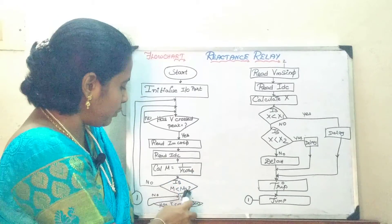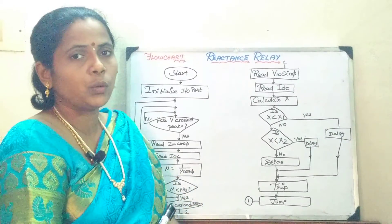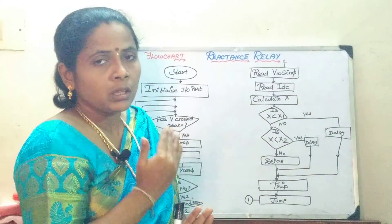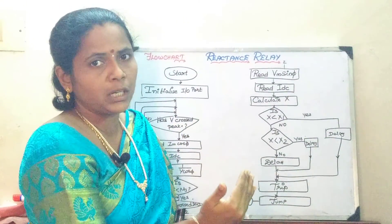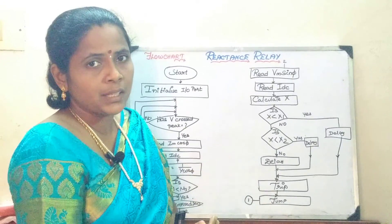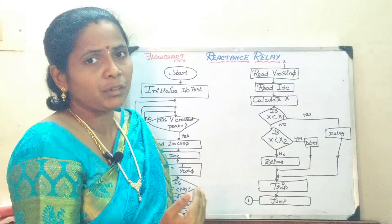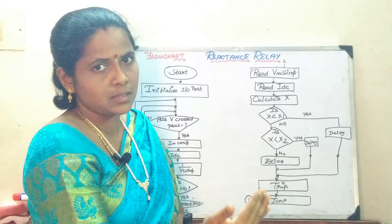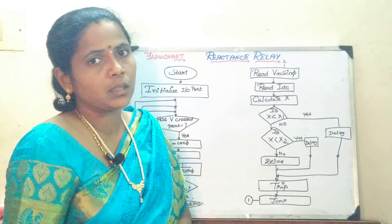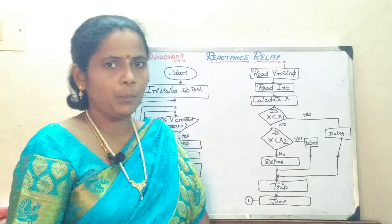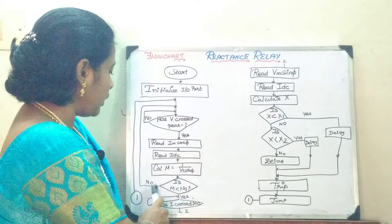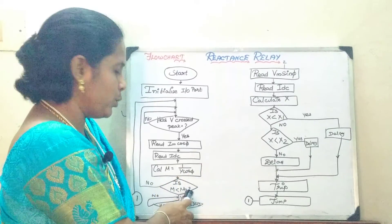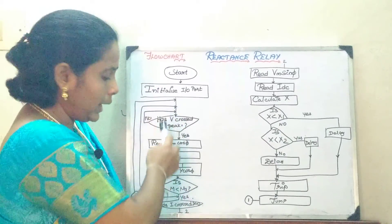You are going to check for the third condition. You know the three-zone protection: the first zone will act from the first line protection to 70 to 80 percent of the line. The second zone protection will act after a predetermined delay from the remaining part of the first section and the second section. The third section is going to provide the backup protection. First, you check whether it is within the zone of three-zone protection and check the values. If not, you go back again.